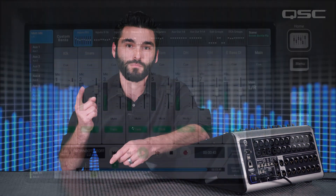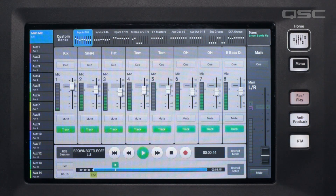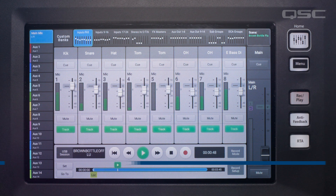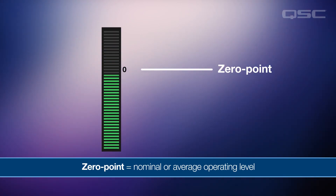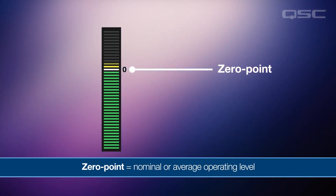The first thing we're going to look at are the channel meters. We've all seen meters on mixers, but what are they telling us? One important point is the zero point. This is where meters turn from green to yellow. Zero represents the nominal operating level of the mixer.